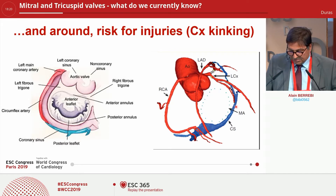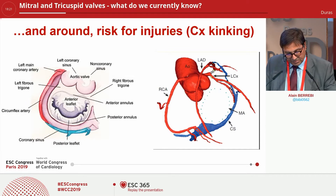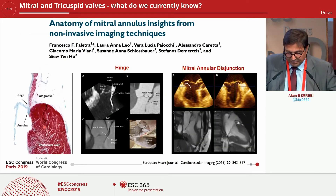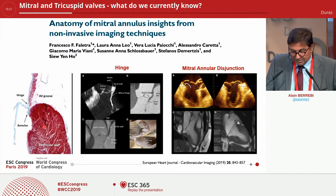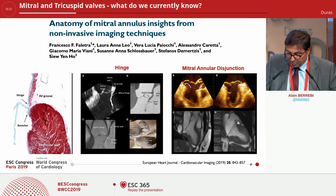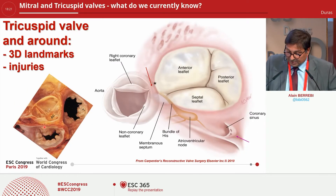Around the mitral valve, we have risk of injuries. These drawings come from the book of my friend Manuel Antunes. Around the anterior leaflet, you have the circumflex artery, which is very important to consider with this coronary view. I recommend a very nice paper just published by Faletra regarding the mitral valve annulus inside from non-invasive imaging techniques, and it is very important to consider CT scan in this field.